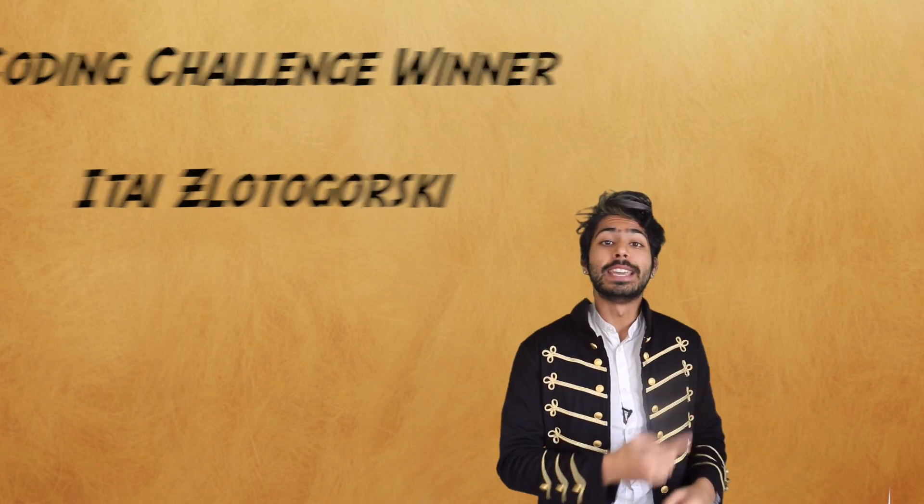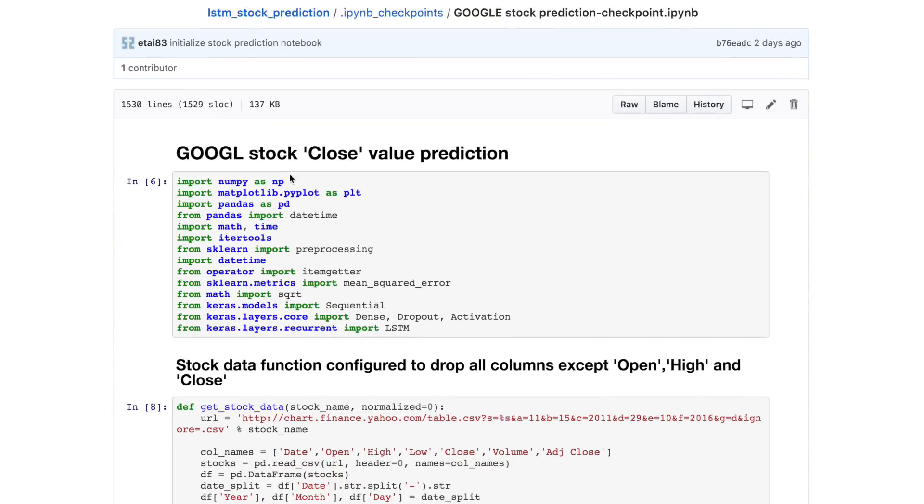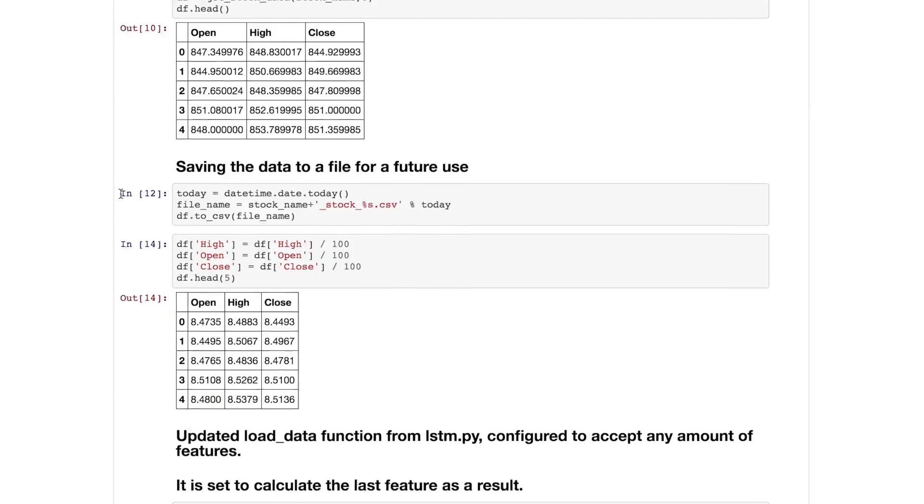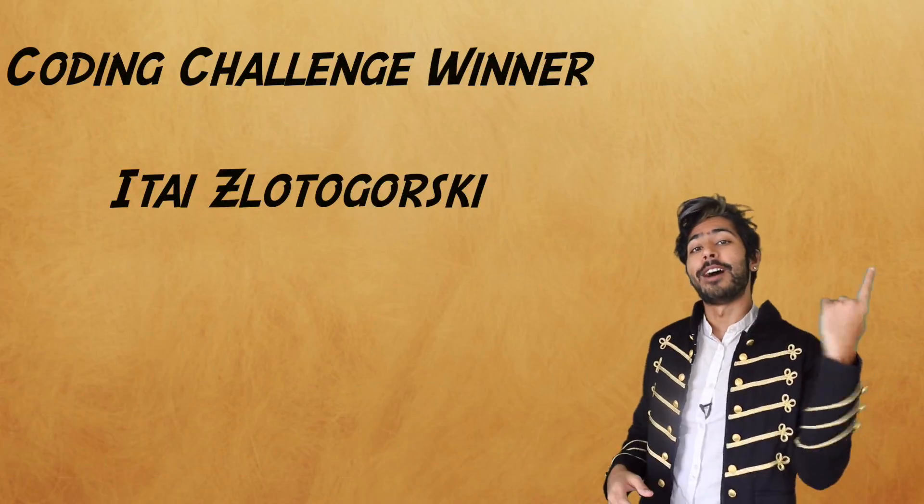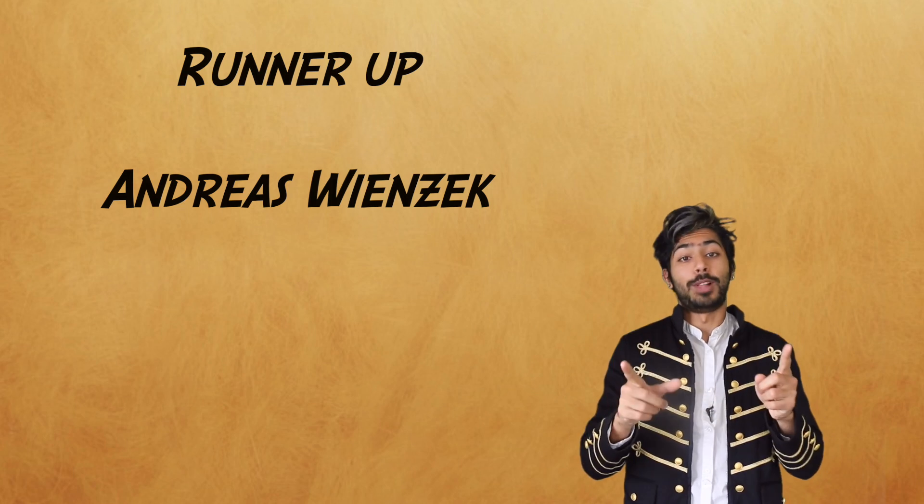The winner of the coding challenge from last week is Itai Lodogorski. He used several features to model Google stock data and artfully used RMSprop as his optimization technique. Wizard of the week. And the runner-up is Andreas Weinczak. Loved your plot.